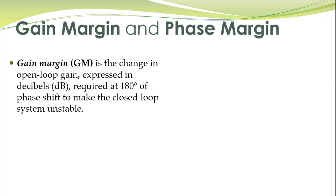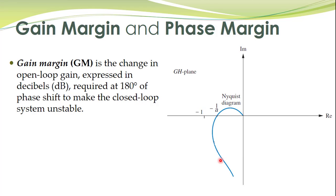More formally, gain margin is the change in open loop gain, expressed in decibels, required at 180 degrees of phase shift to make the closed loop system unstable. In the polar plot, the point with a phase angle of 180 degrees has a magnitude of 1/a, so the gain margin equals a.